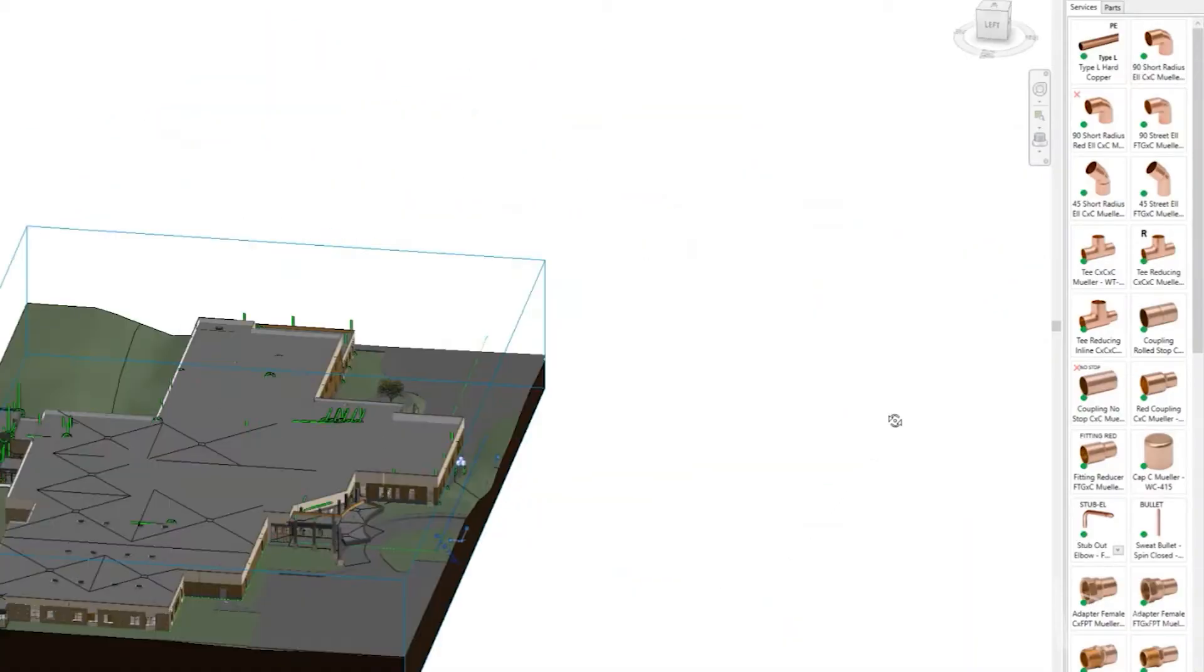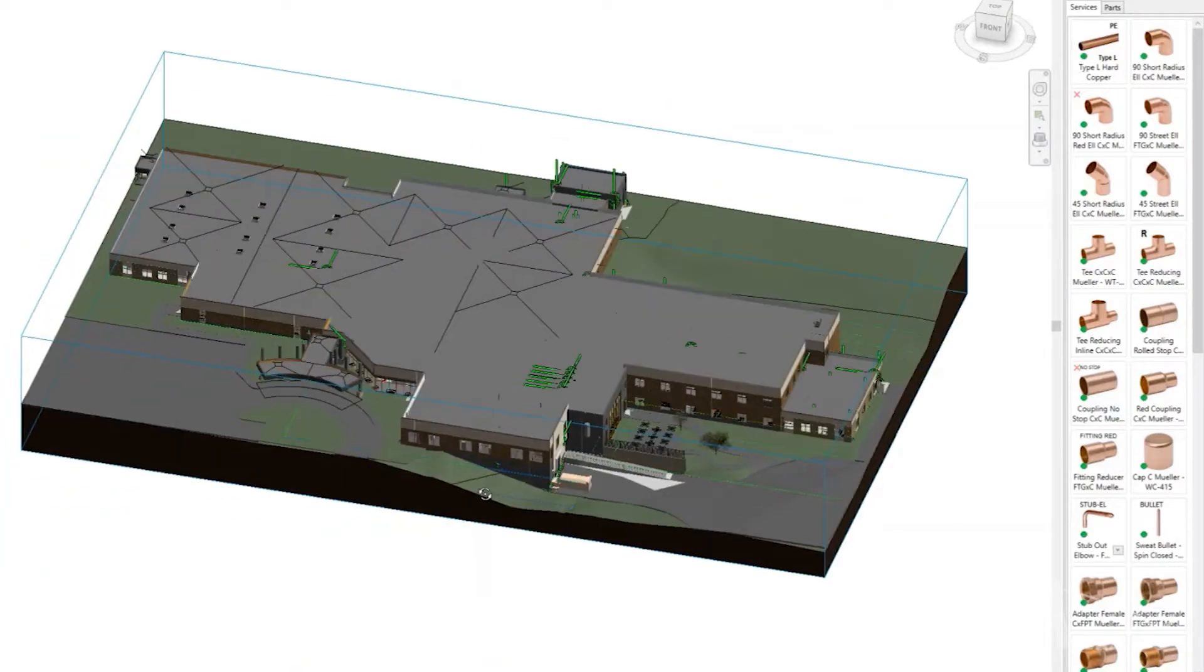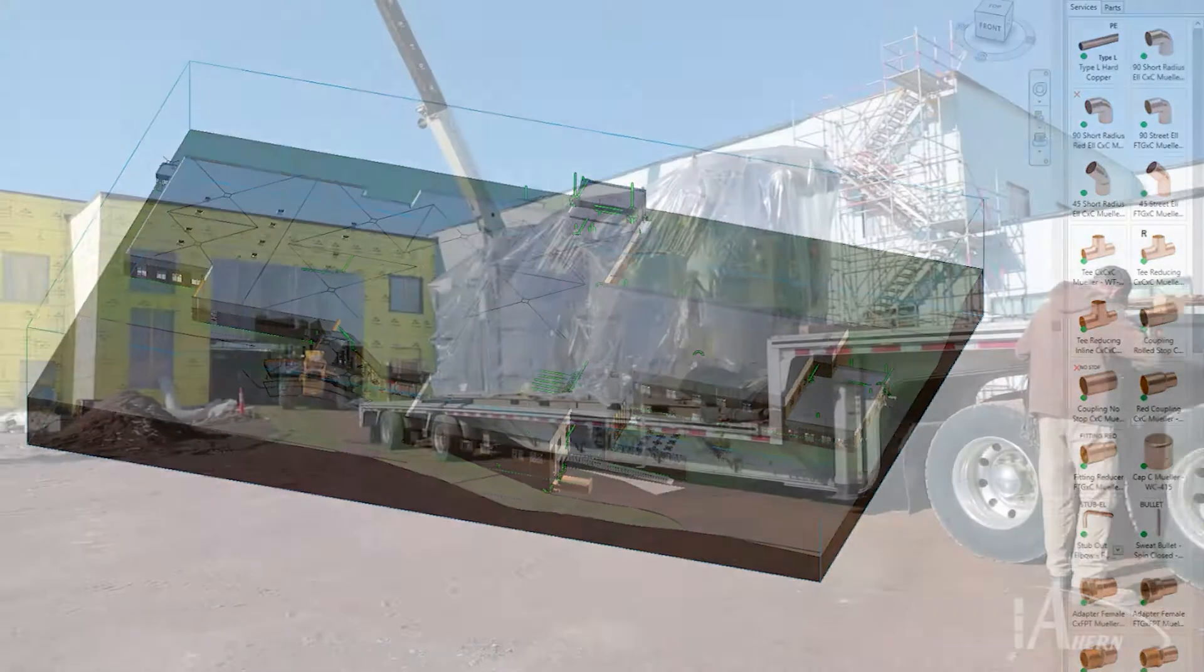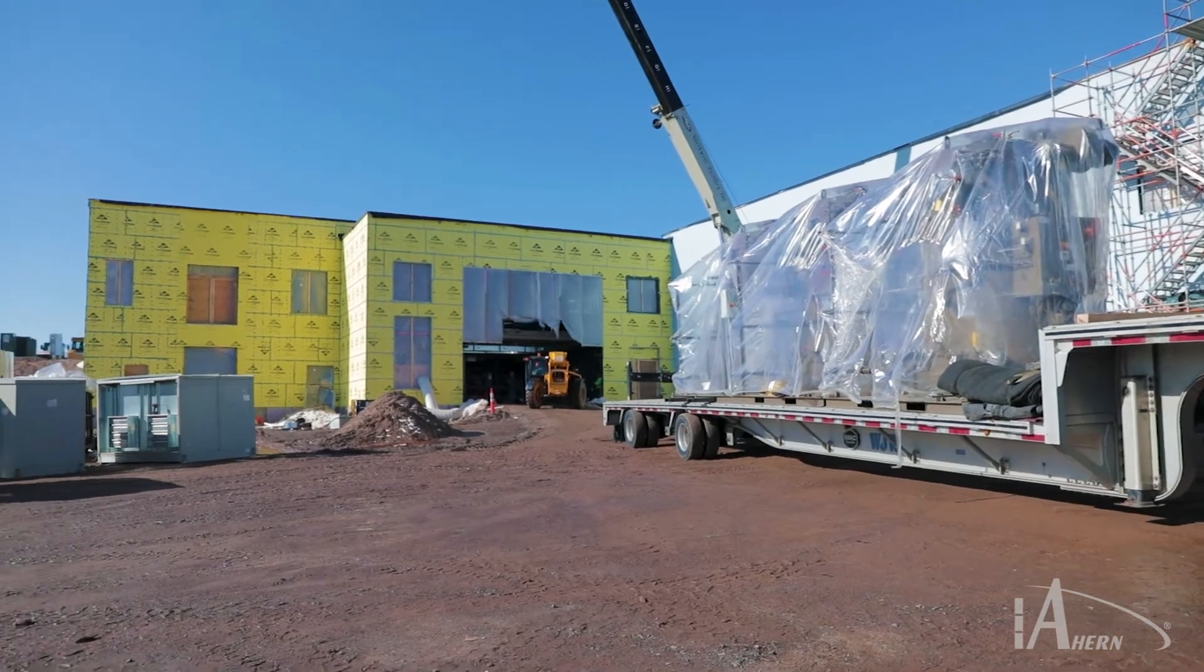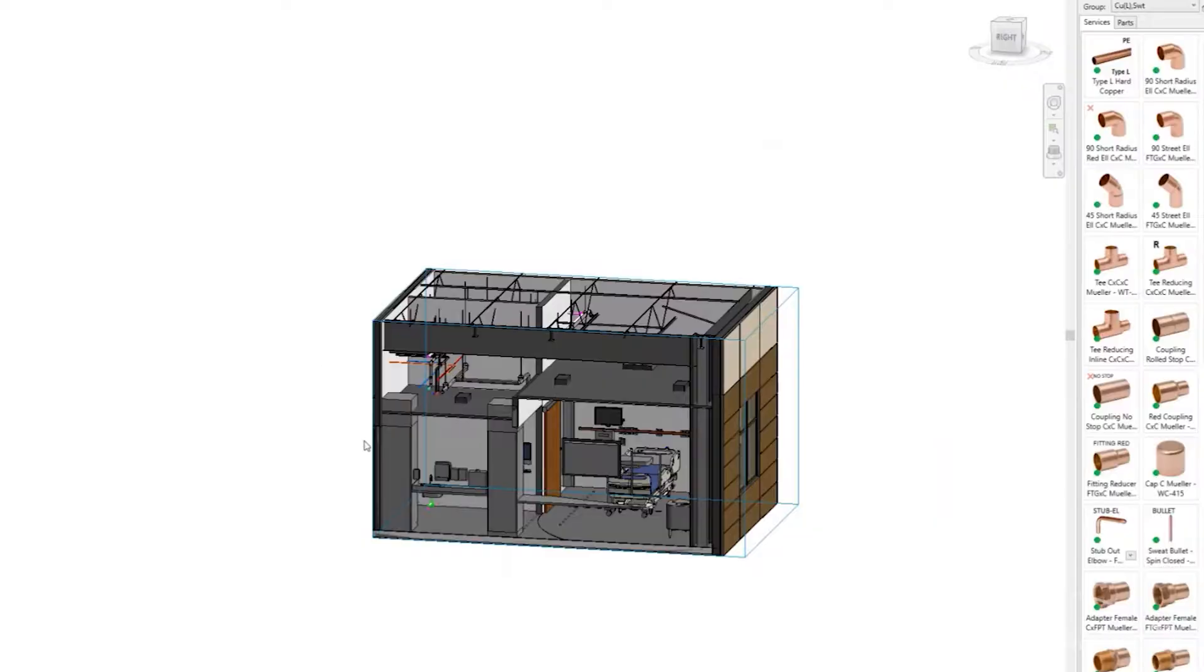BIM, otherwise known as Virtual Design Construction, is the process of modeling varying components to virtually construct a project prior to physically constructing it. This is made up of three main parts: modeling, coordination, and construction drawings.